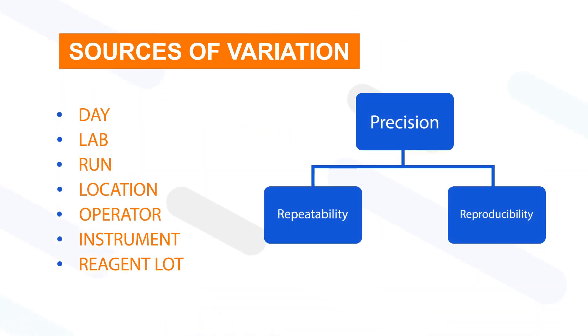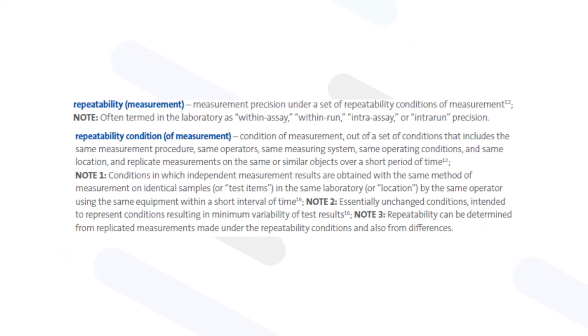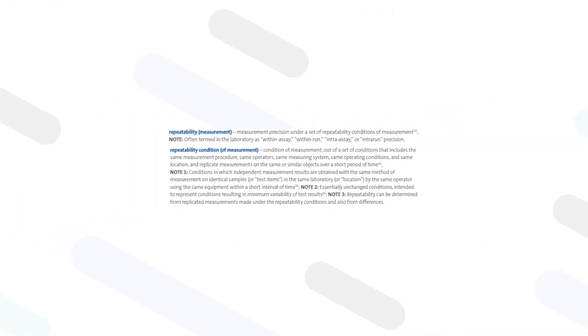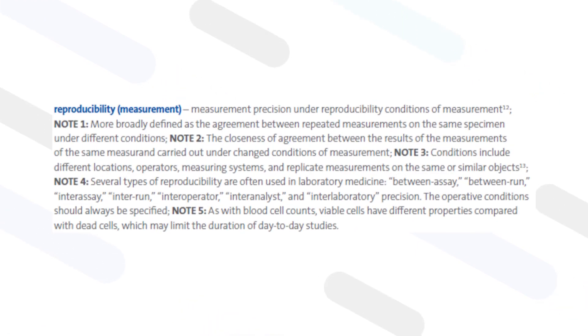Based on sources of variation in a measurement procedure, precision measurement can either be repeatability or reproducibility. Repeatability is the variability among replicate measurements of a sample under the same constant experimental conditions. Reproducibility is a measurement of precision under changed measurement conditions.